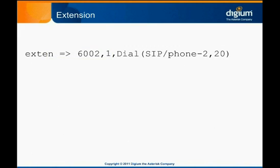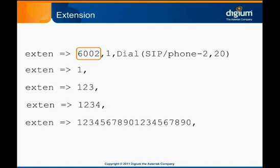The extension name we chose to dial our phone is 6002. The length of the extension is not restricted. It may be 1, 3, 4, or even 20 characters long. It's completely up to you.